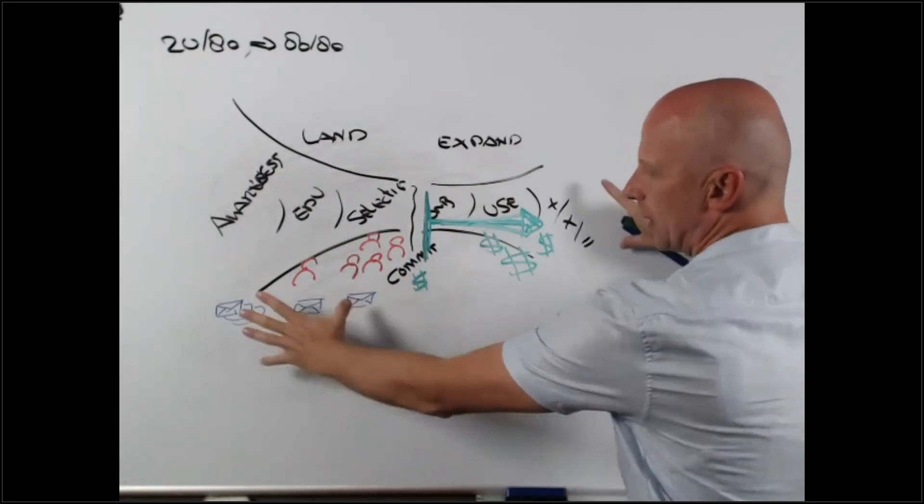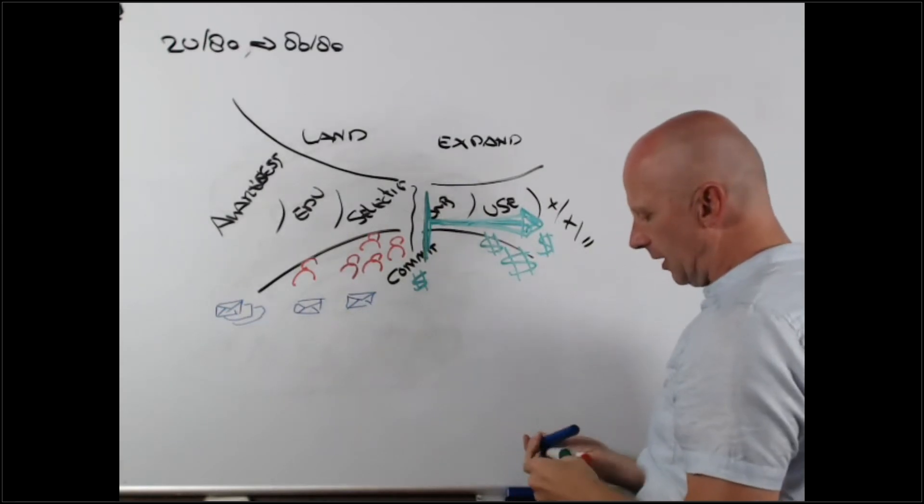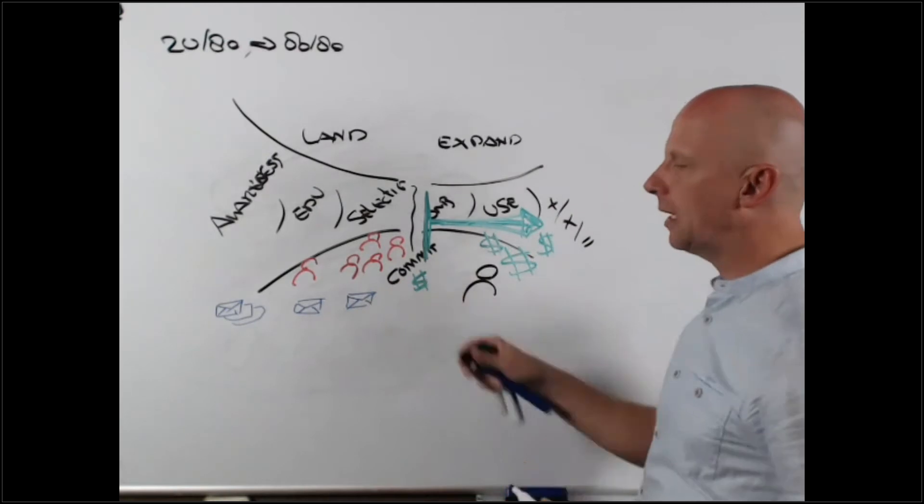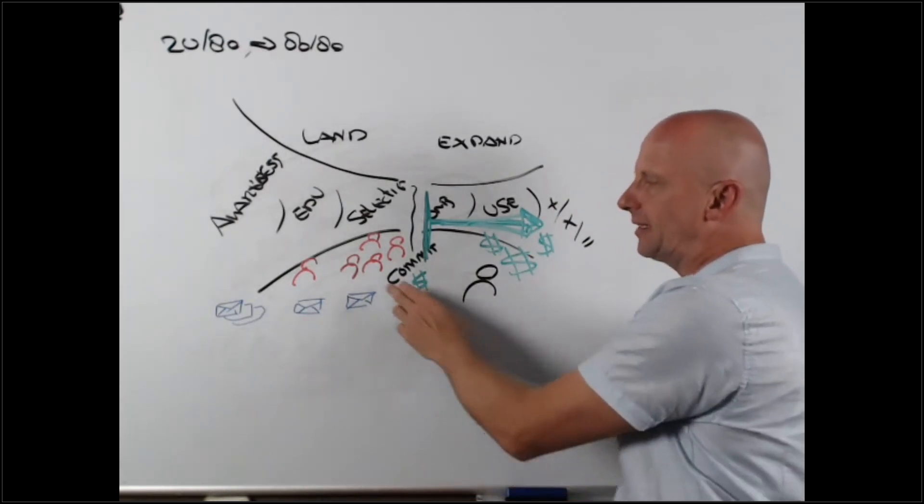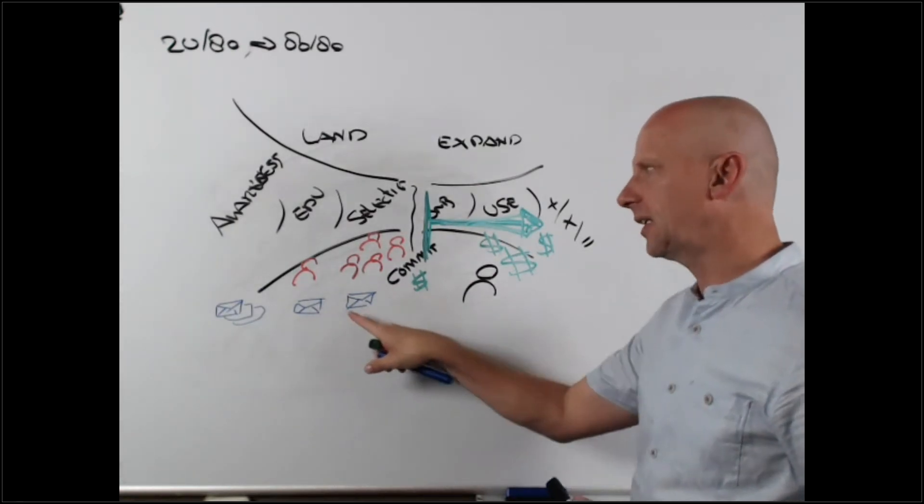How do we make sure that the people down here who are post-sale, how do we line them up? They need to be taught and trained the very same principles that the folks up here have been taught. Marketing needs to extend their marketing campaigns equally all the way down here.